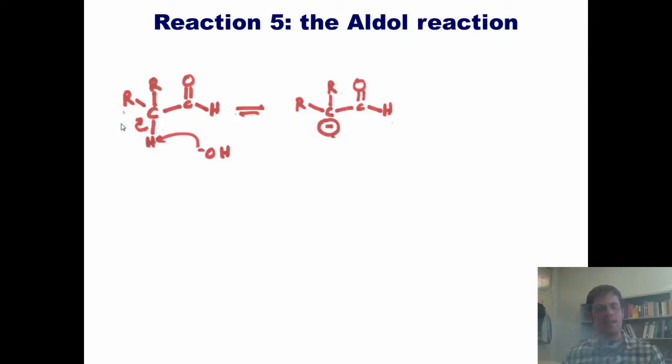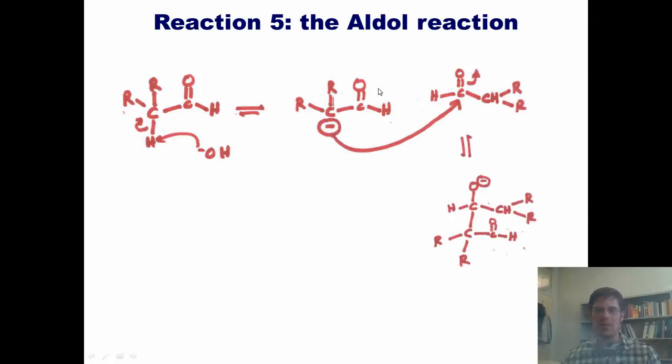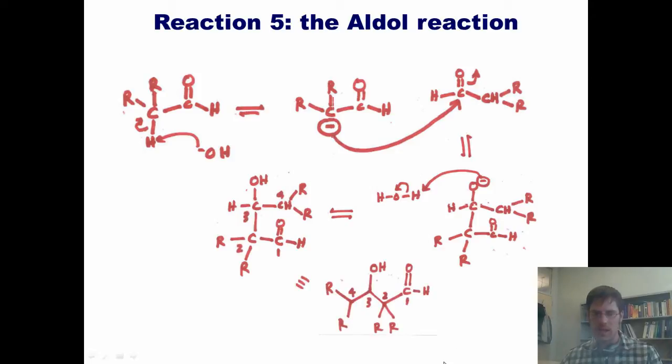That enolate then stirs around in solution and sees another molecule of starting material, aldehyde or ketone. The negatively charged carbon will close in on that carbonyl carbon, thrusting the electrons up to give this intermediate. This intermediate then lingers until it gets protonated by water to give this product, which we can redraw as this.